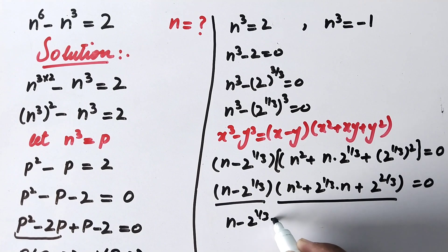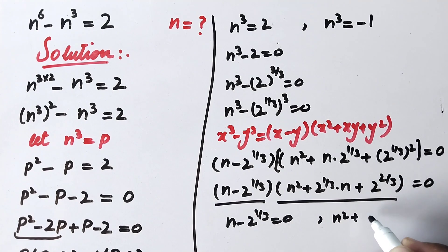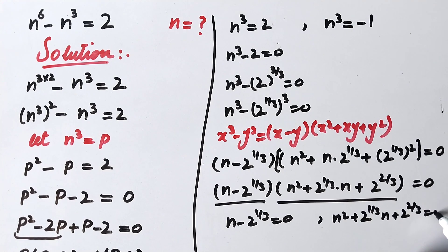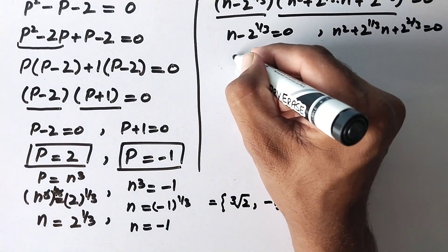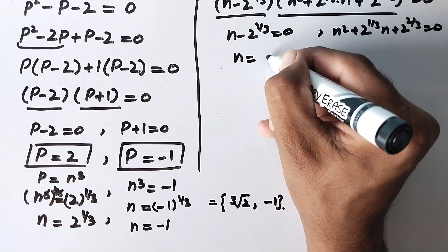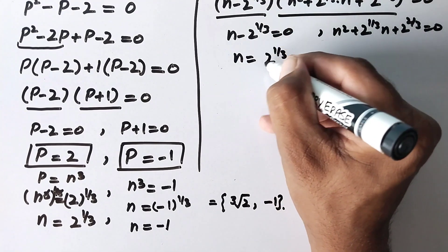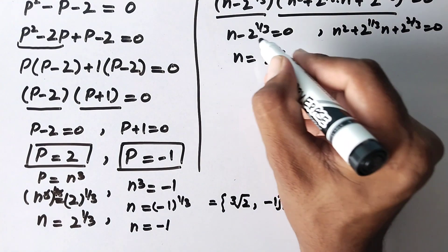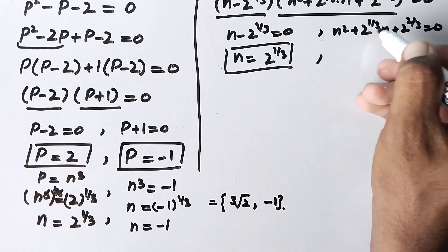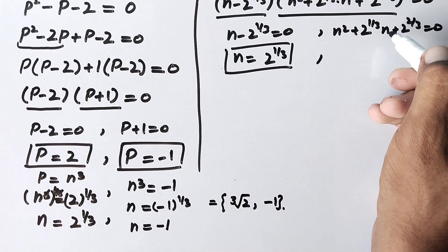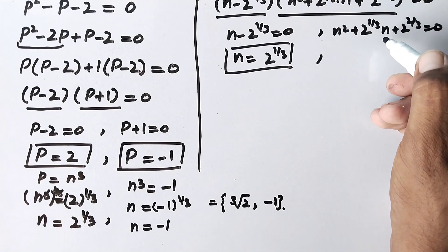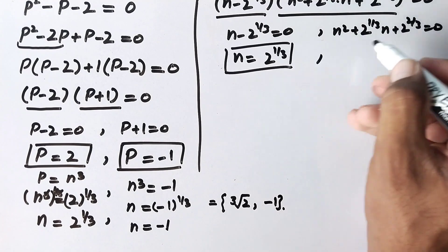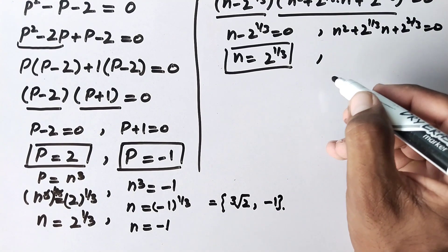This gives two factors: n minus 2 to the power 1 over 3 equals 0, and n squared plus 2 to the power 1 over 3 times n plus 2 to the power 2 over 3 equals 0. From the first factor, n equals 2 to the power 1 over 3, which we already found. The second factor is a quadratic equation whose quadratic formula will yield two complex roots, giving three roots total for Case 1.